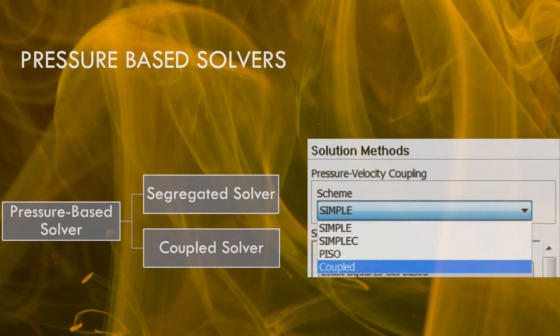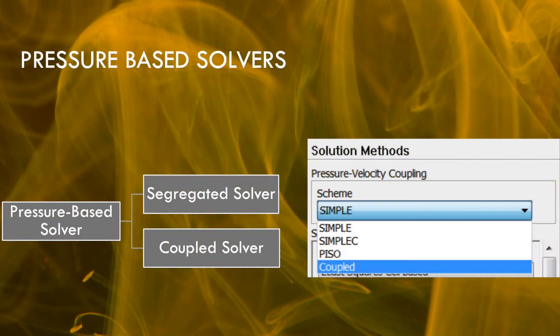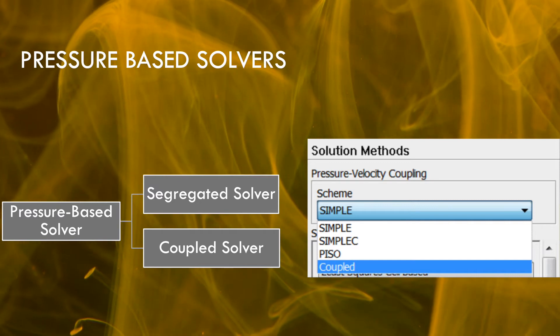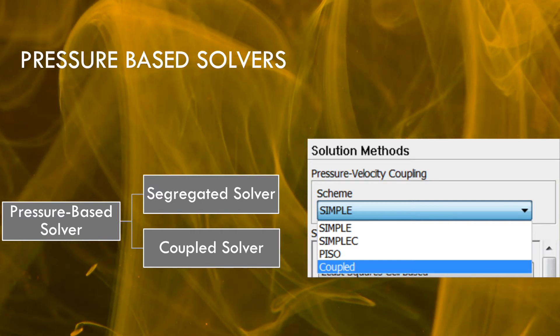In Ansys Fluent there are two pressure-based solver algorithms the user can choose from: a segregated algorithm and a coupled algorithm. Let us begin first with the pressure-based segregated solver.